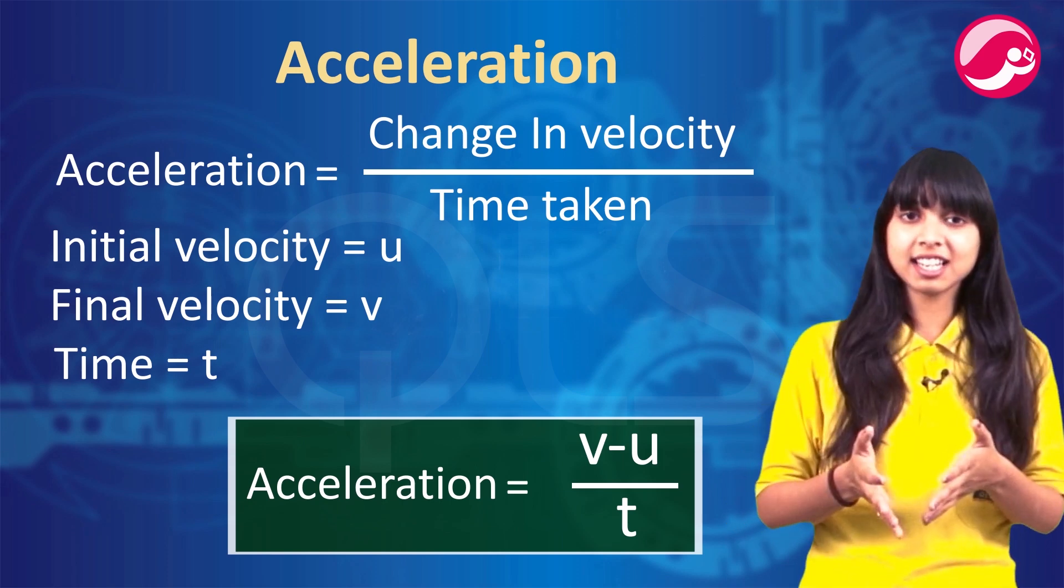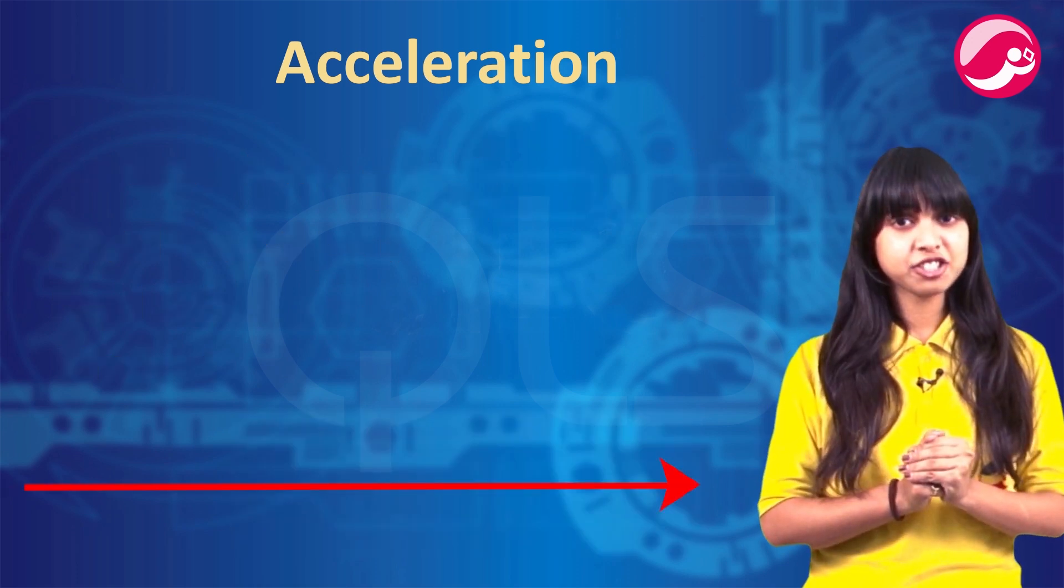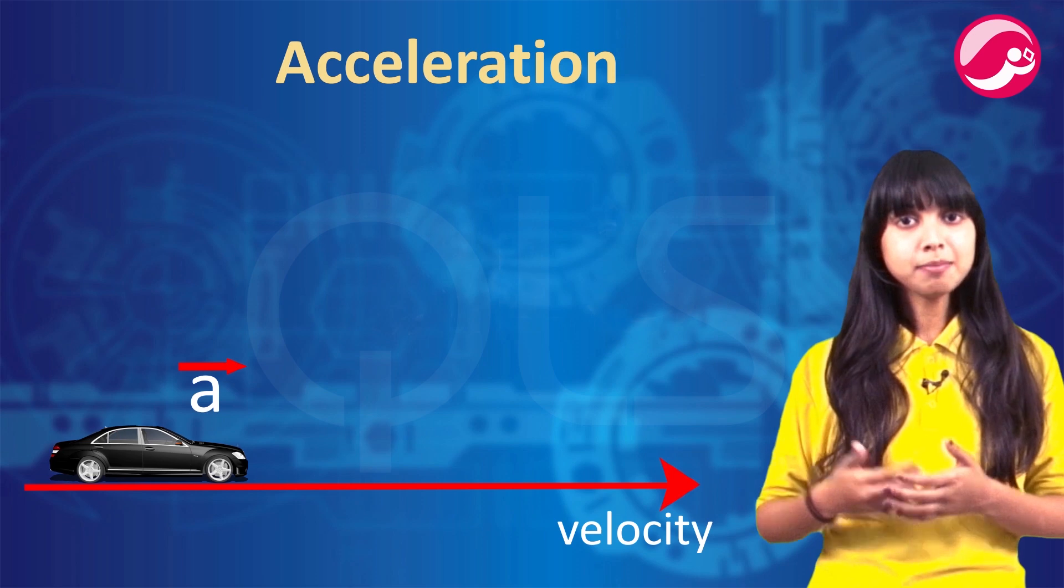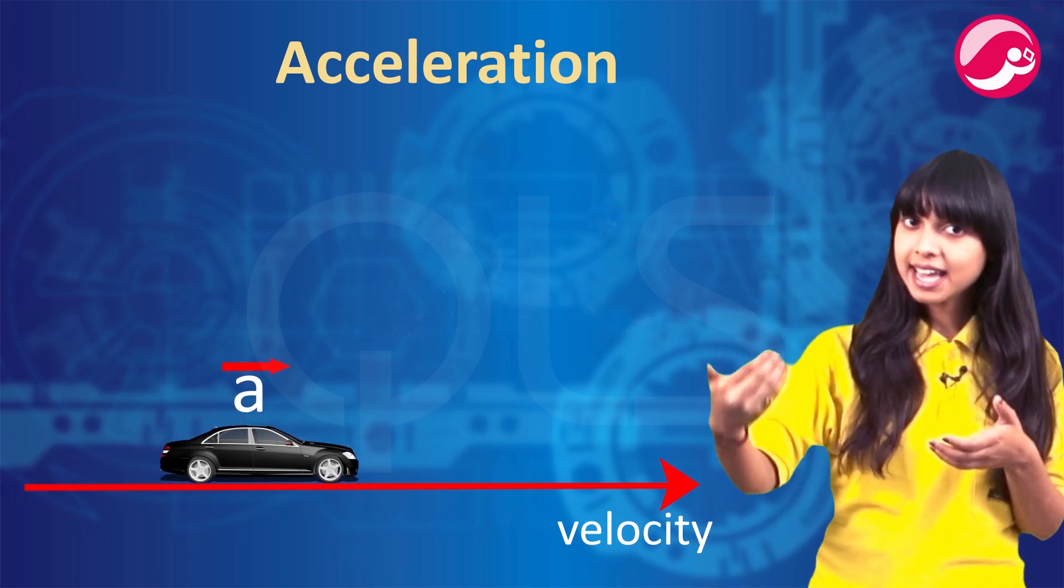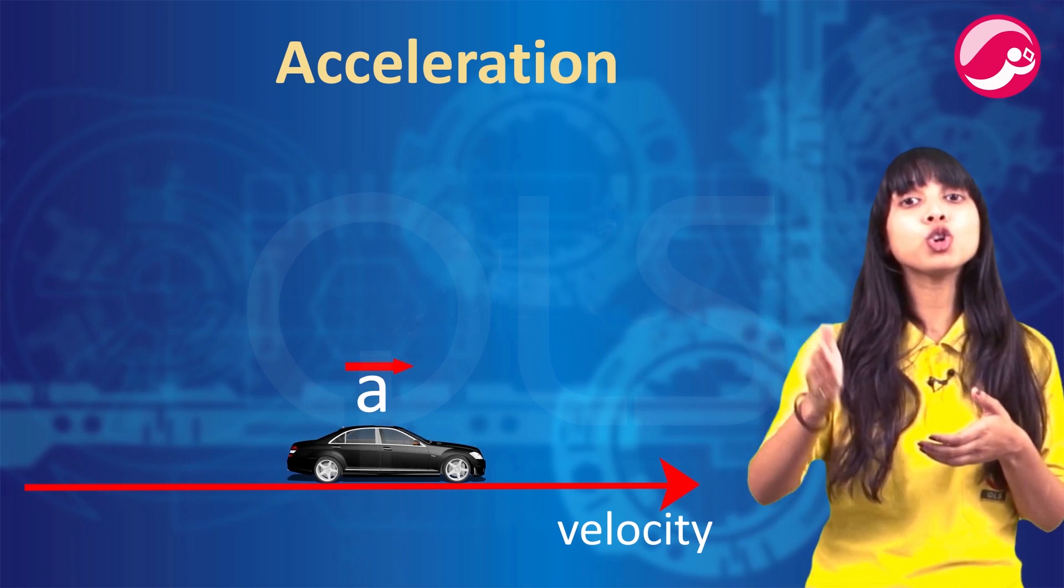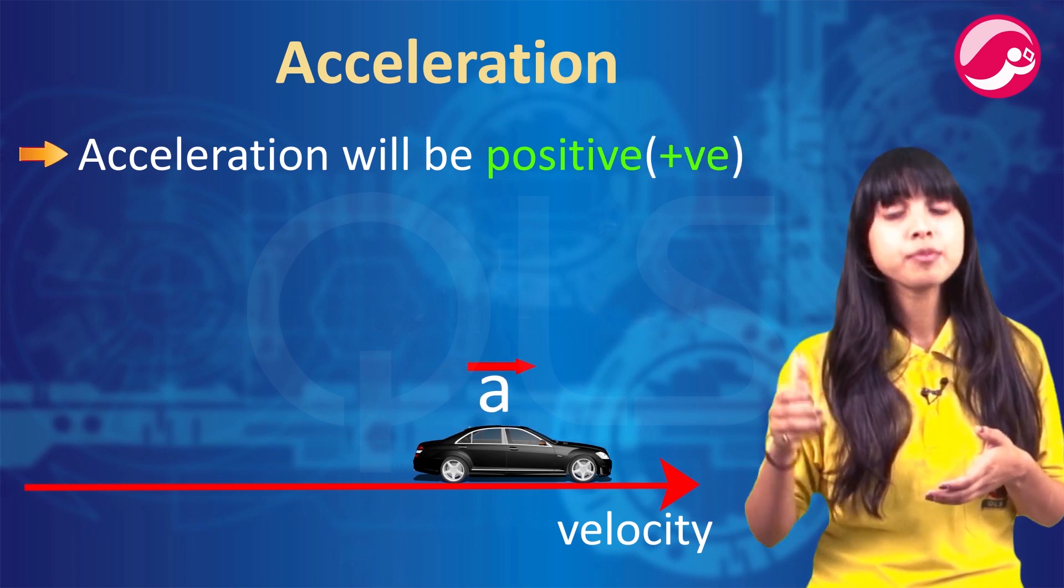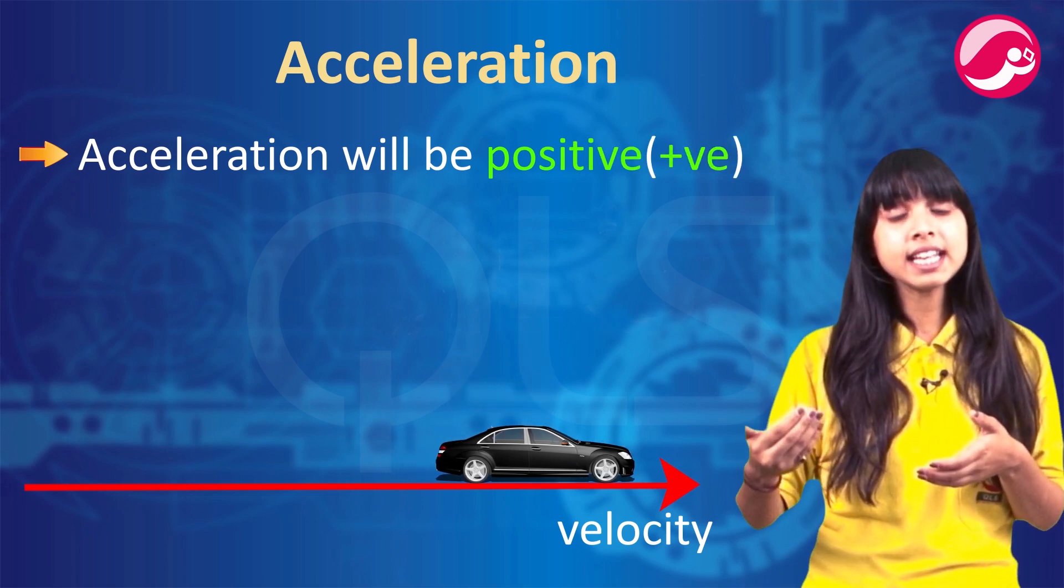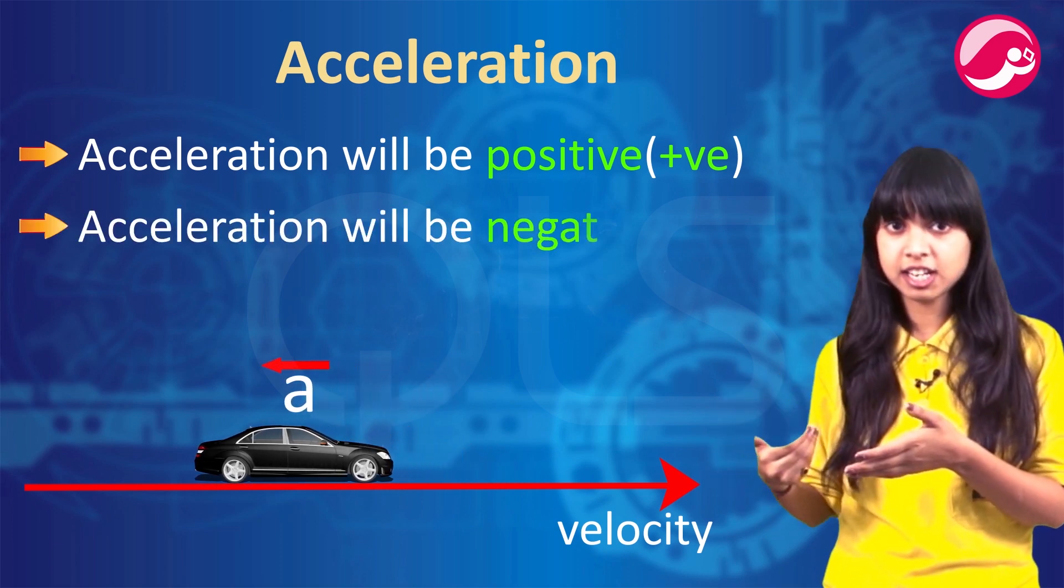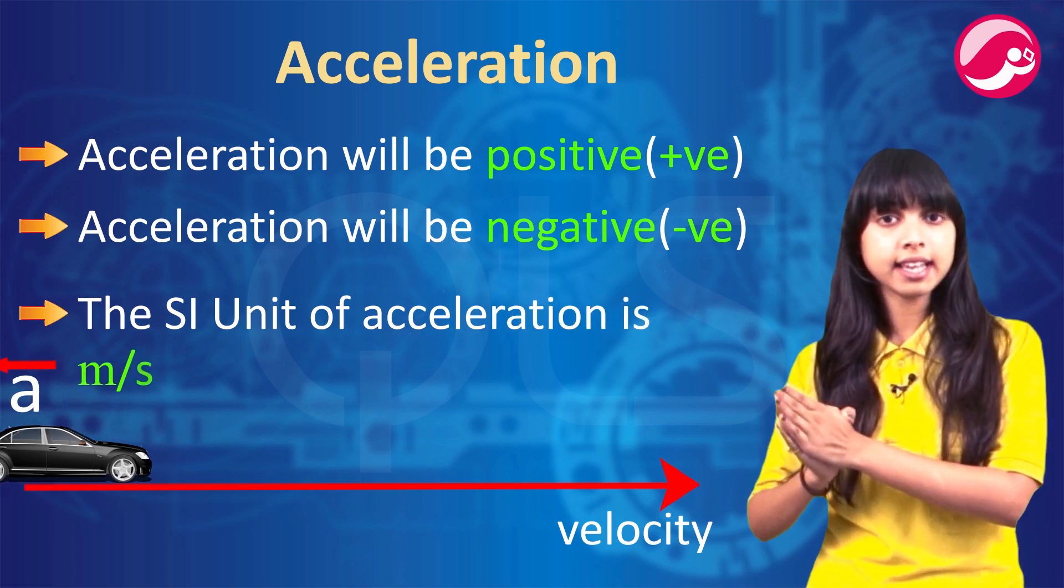If acceleration is in the direction of the velocity, if both are in the same direction, it is our positive acceleration. If we get the opposite acceleration of the velocity, it is our negative acceleration. So the SI unit of acceleration is meter per second square.